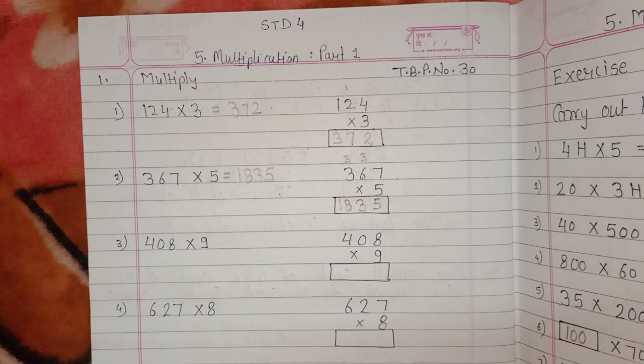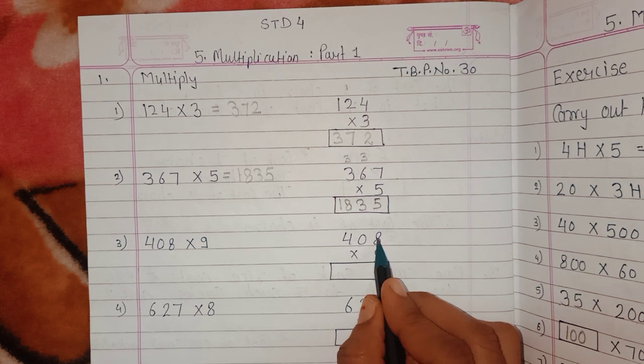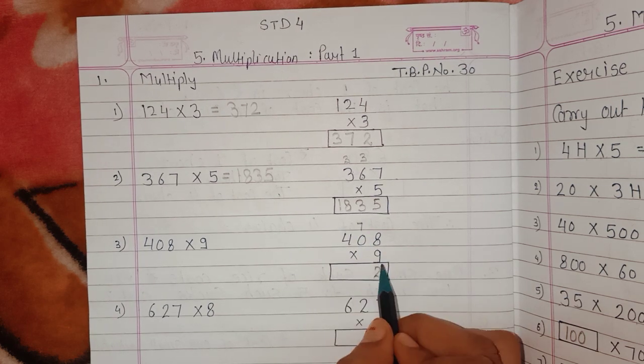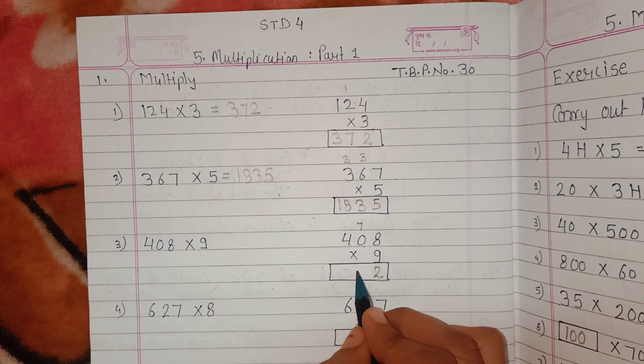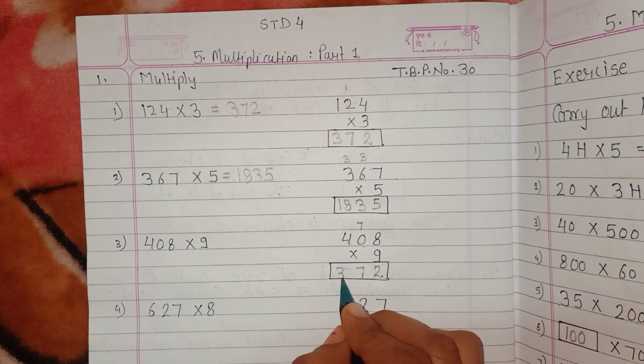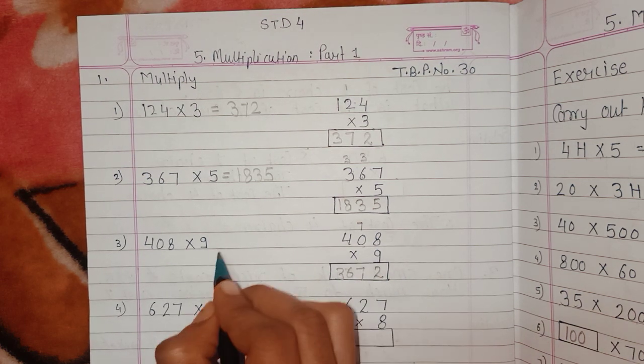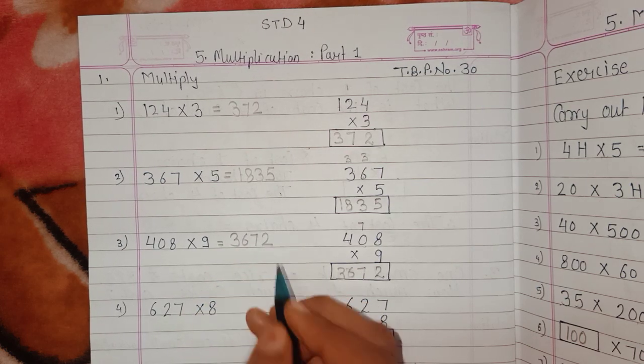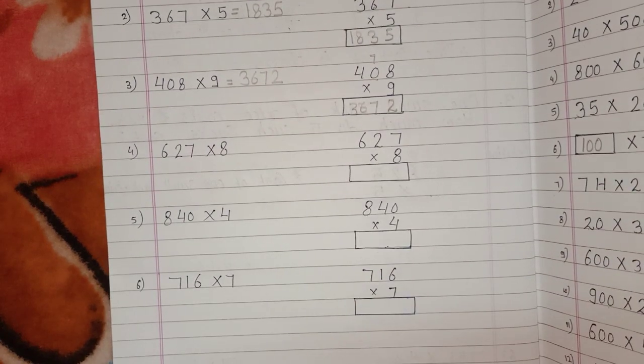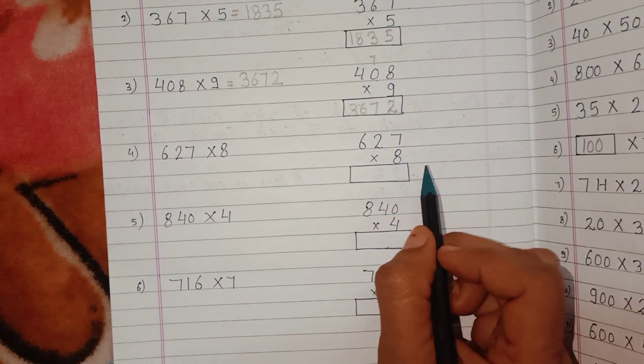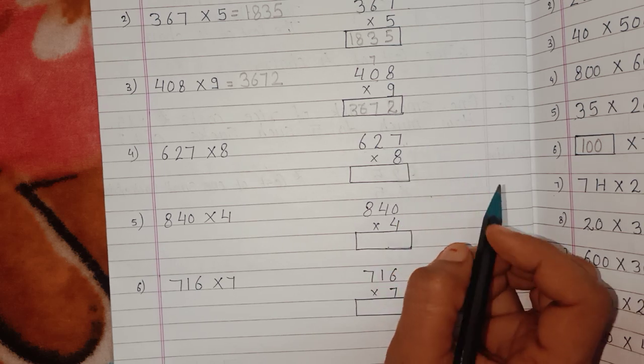Question number 3: 408 multiplied by 9. 9 times 8 is 72, so 2 here, carry 7. 8 times 2 is 16. 8 times 7 is 56.